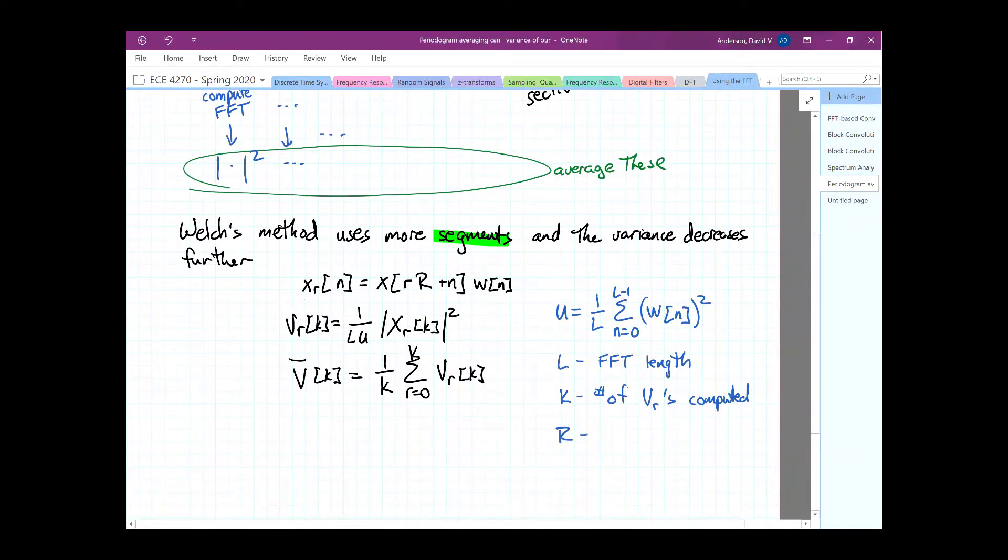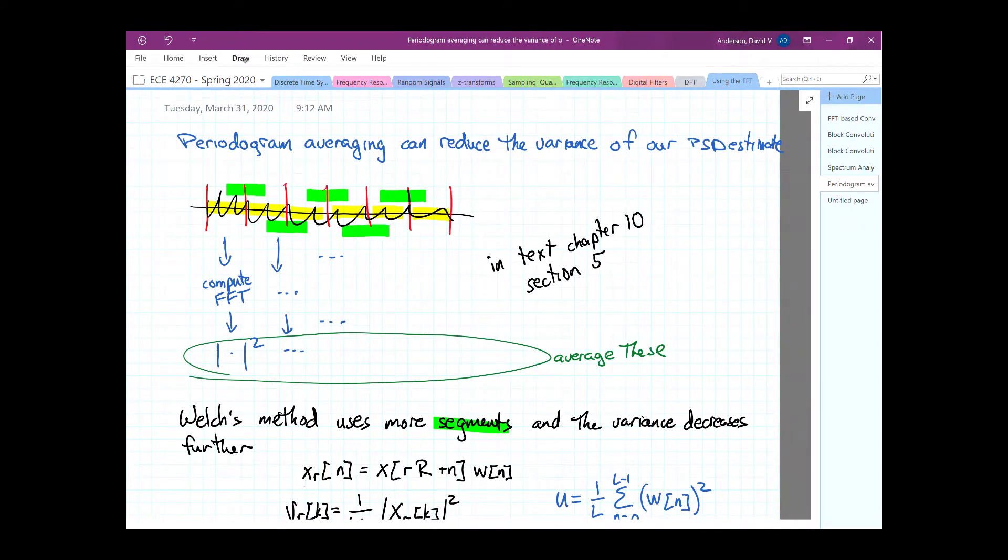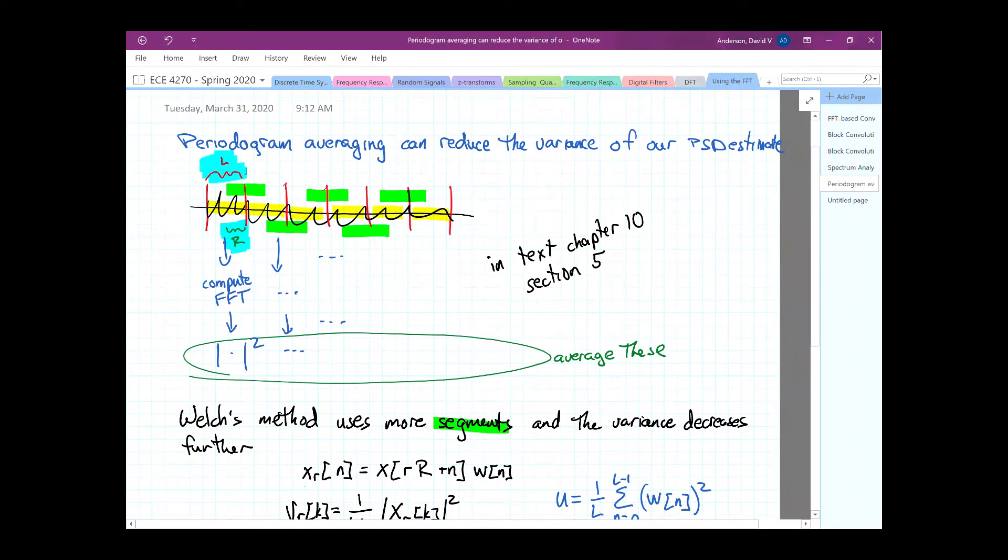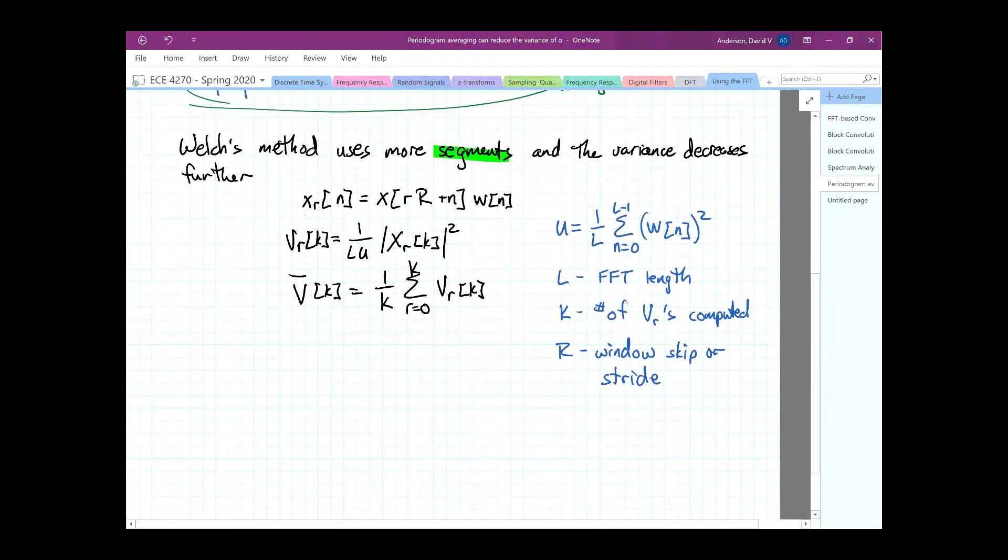And K is the number of frames or windows. The number of the R's computed. Okay. So, now we have one other thing that's new. R is the, what we call the window skip. Or step, which I think stride is better. So, what this is basically saying is we are going to grab L samples. So, let's put this up on our original thing. That's L. But this quantity right here is R. So, L is the length of the FFT that we're taking. And R is how far we step before we grab another L samples. So, there we go. I'll talk to you again soon. Thank you.